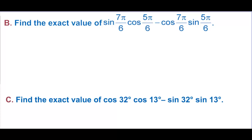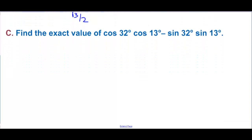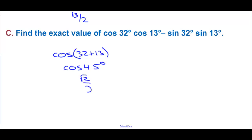Find the exact value of sine of 7 pi over 6 times cosine of 5 pi over 6, minus cosine of 7 pi over 6 times sine of 5 pi over 6. This matches the sine angle subtraction pattern, so we have the sine of 7 pi over 6 minus 5 pi over 6, which is the sine of 2 pi over 6, or sine of pi over 3, which equals square root of 3 over 2. For the next problem, cosine of 32 degrees times cosine of 13 degrees minus sine of 32 degrees times sine of 13 degrees matches the cosine addition formula, giving cosine of 45 degrees, which equals square root of 2 over 2.